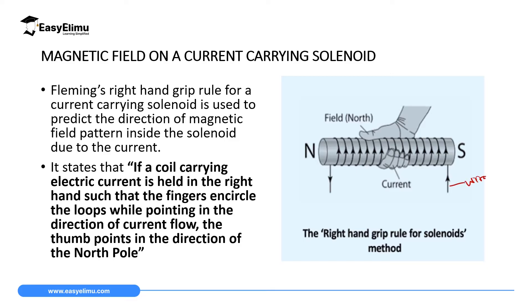In this illustration, if you have a solenoid where current is moving up in front, you bring your right hand and grasp the solenoid, making sure the fingers are pointing in the same direction the current is flowing in the solenoid. Then automatically your thumb will point to the north pole of the magnet being formed.